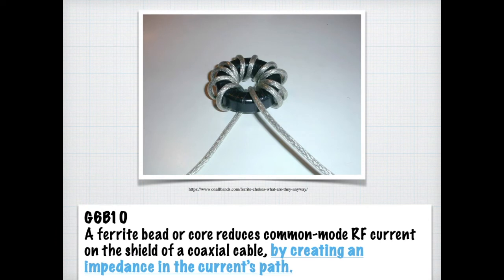A test question that you might get is how does a ferrite bead or core reduce common mode RF current on the shield of a coax cable? For the exam, you just need to know that it does so by creating an impedance in the current path.